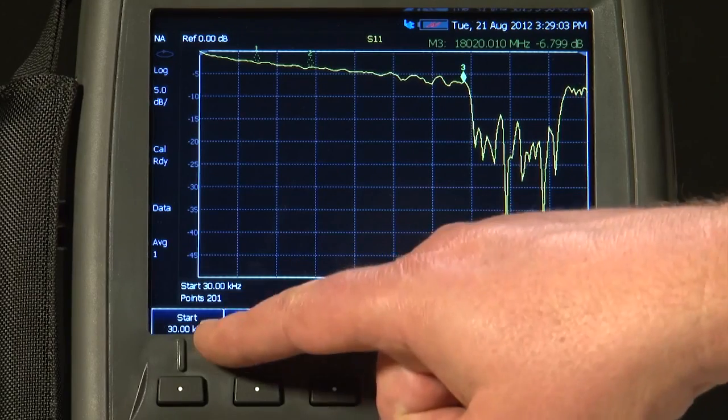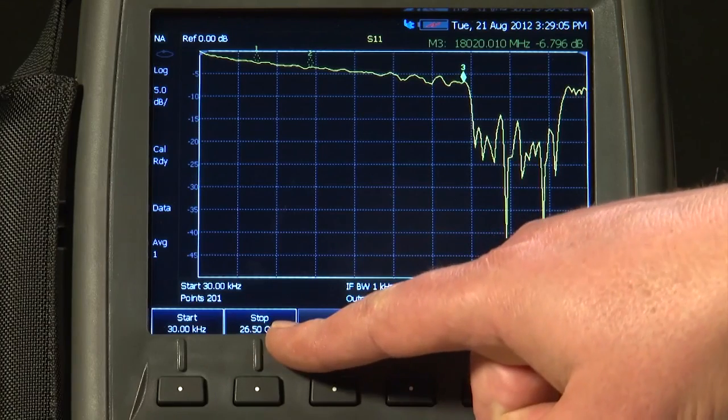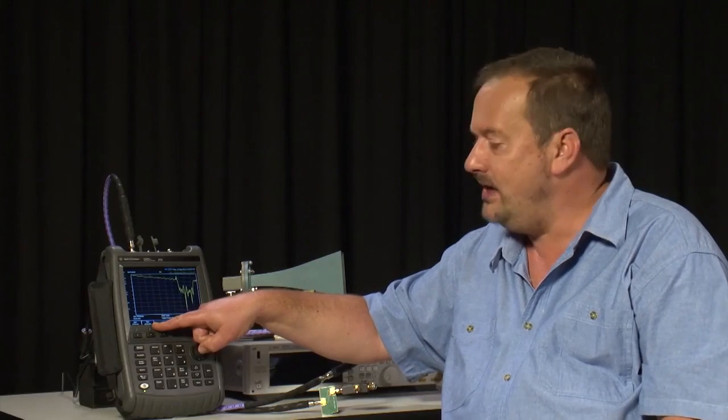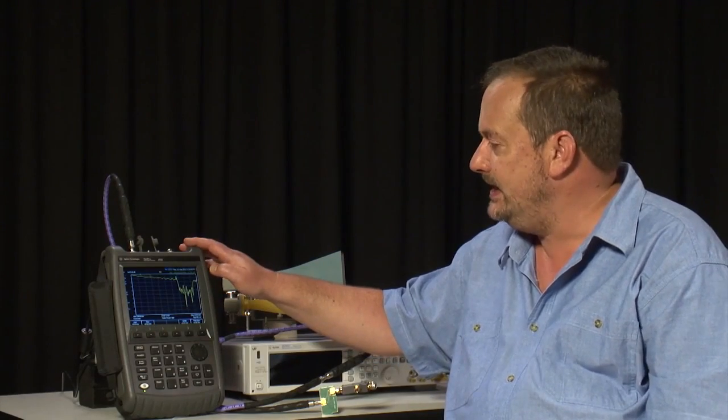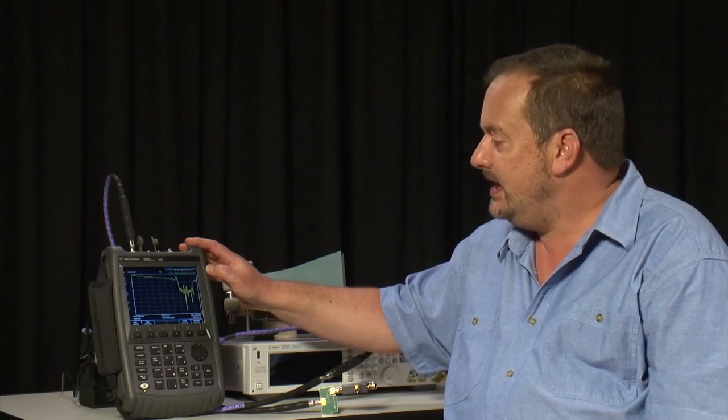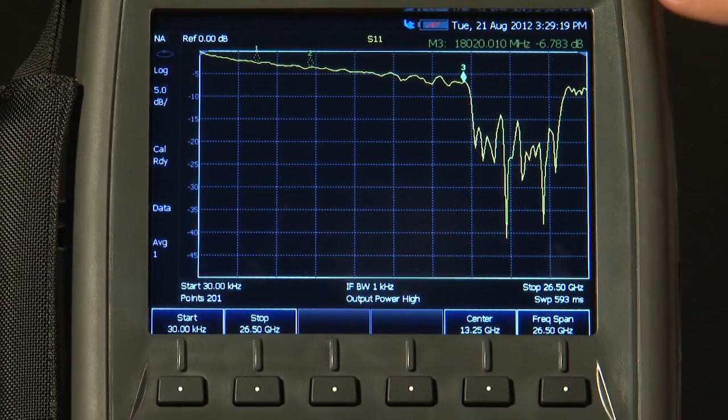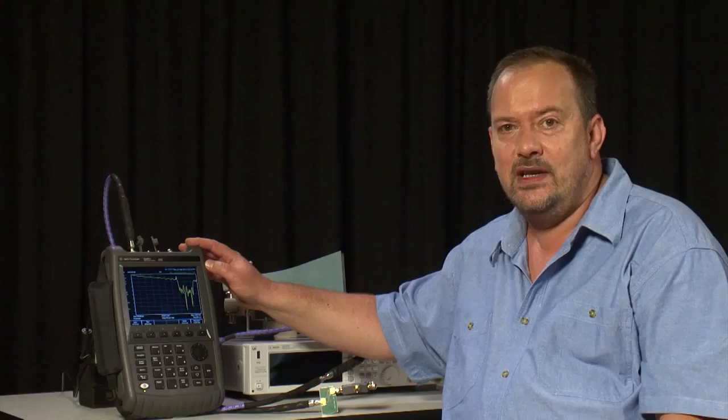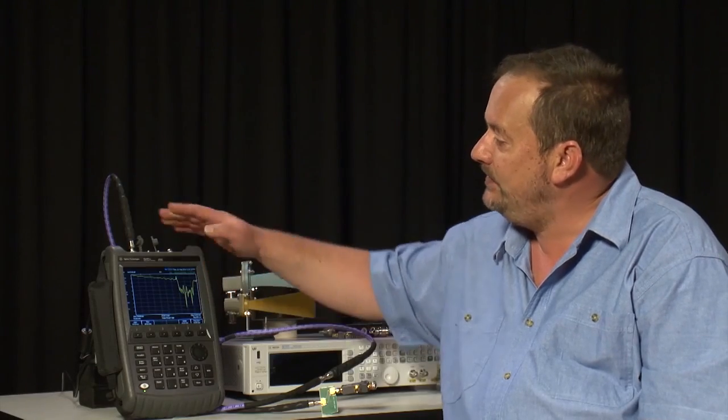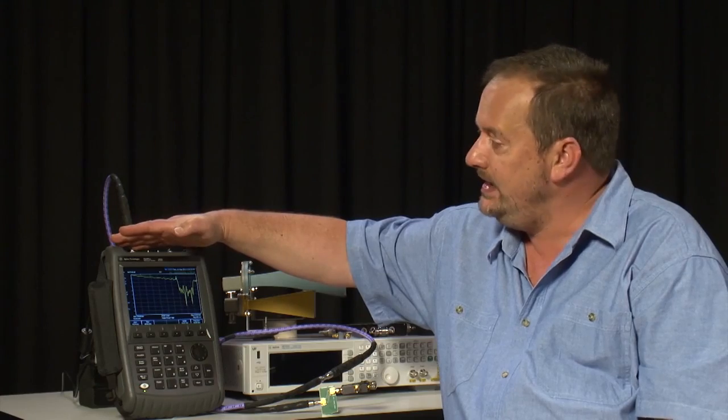You'll see I have set the frequency range on the FieldFox to cover its entire range. That is 26.5 GHz in the case of this model I have here. And in fact, I've just done an instrument preset. I'm not even going to perform a calibration because every FieldFox is supplied with a CalReady calibration where at the factory a full S-parameter calibration has been performed at the reference plane of port 1 here.